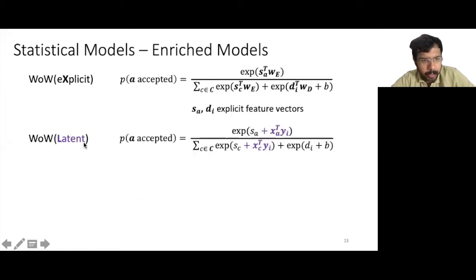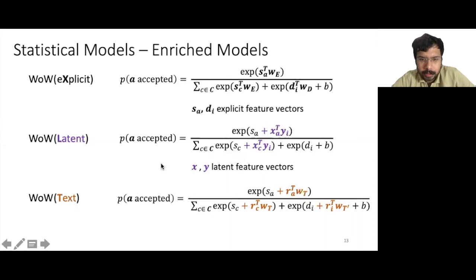The first of these is the BAU explicit model that considers the explicit feature vectors. We see that this model is very similar to the BAU model that we saw previously, except that SA and DI are now explicit feature vectors that capture the features of the edit and dossier respectively. Secondly, we have the BAU latent model that considers the latent feature vectors. X and Y are the feature vectors of the MEP and the dossier respectively.